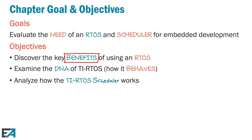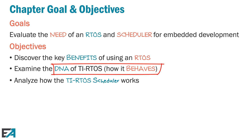Another objective is learning the DNA of TI's RTOS — introducing you to the characteristics of this RTOS. That way, if you're thinking about how this RTOS would behave, since we've introduced you to how it behaves from its DNA, what does it do if this happens or that happens — sort of rules of engagement for this TI-RTOS — you'll be able to predict what's going to happen and also write better code. And of course, we'll analyze how the RTOS scheduler works as well.